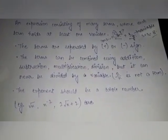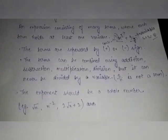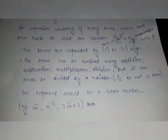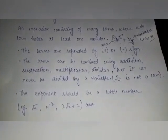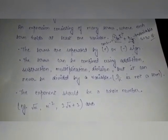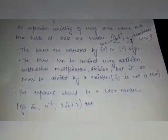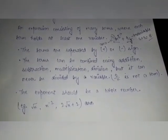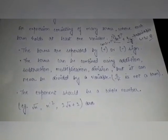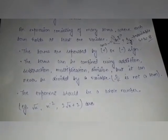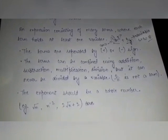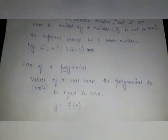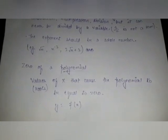The third feature is that the exponent must be a whole number. Your variable's exponent must be a whole number like 1 or 2. For example, if you write root x, that means x to the power 1/2, or x to the power minus 2 — these won't be called polynomials because 1/2 and minus 2 are not whole numbers.